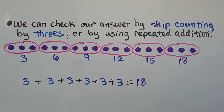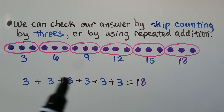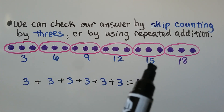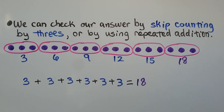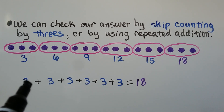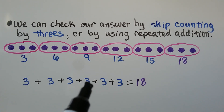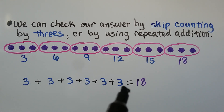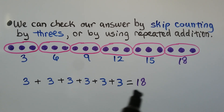We can check our answer by skip counting by threes: 3, 6, 9, 12, 15, 18 — and he had 18 dog treats. We can also do six threes using repeated addition: 3 plus 3 plus 3 plus 3 plus 3 plus 3 equals 18. So we know our answer is correct.